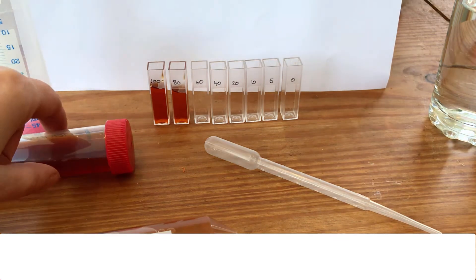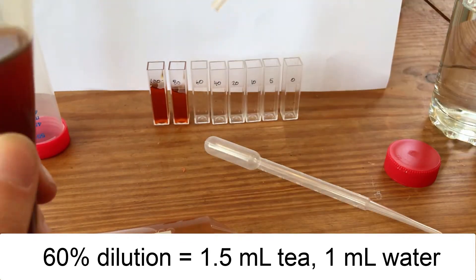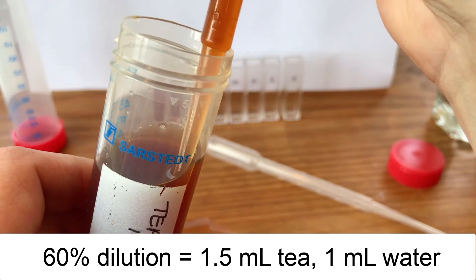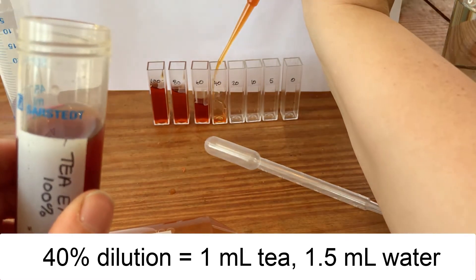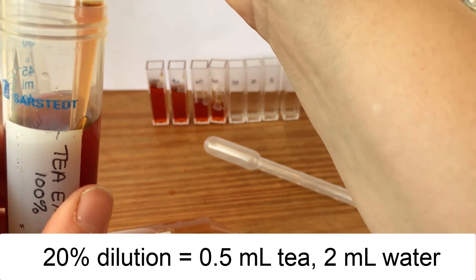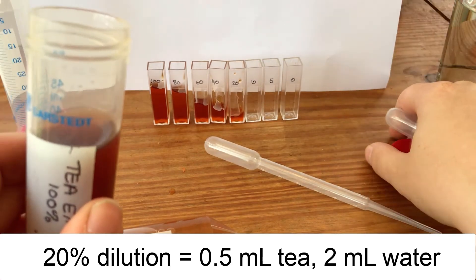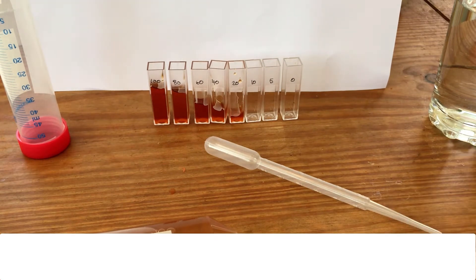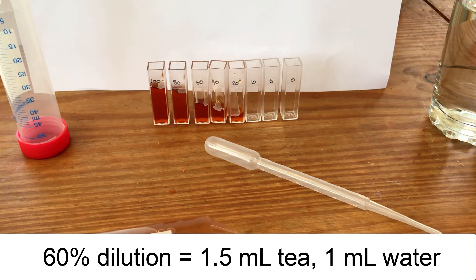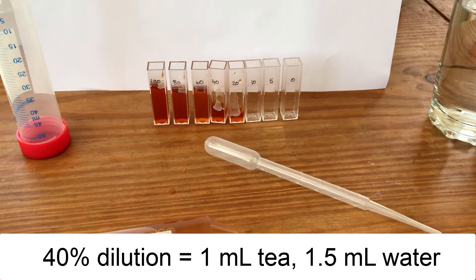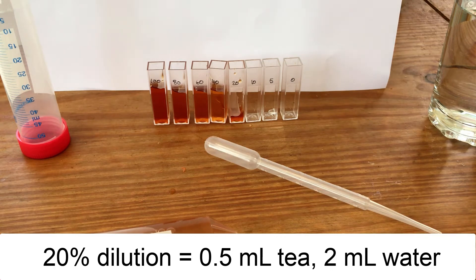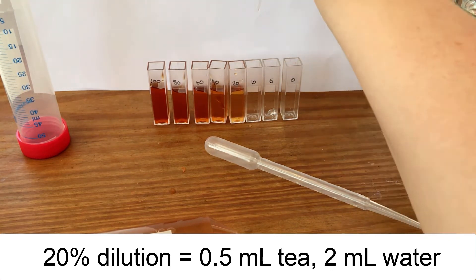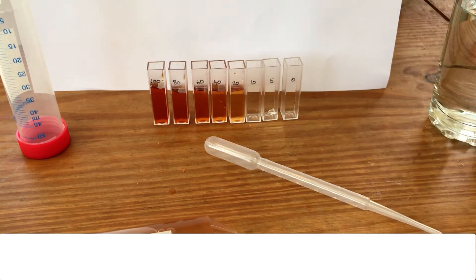I'm going to keep doing this for my other dilutions using the values in the table. For the 60% I'm going to want 1.5 ml in there, for the 40% I'm going to want 1 ml in there, for the 20% I'm going to want 0.5 ml. So I'm putting less tea in each of those but then I'm diluting it with water. The 60% I want 1 ml going in, then I want 1.5 for the 40%, and then I want 2 for the 20%. As I say we've given you these values in the table.